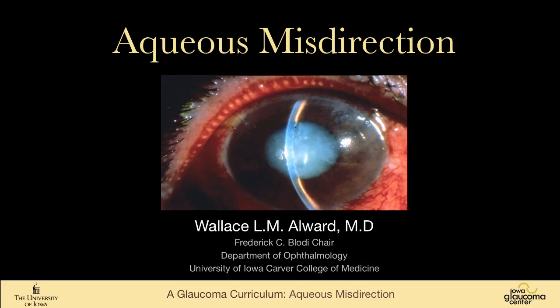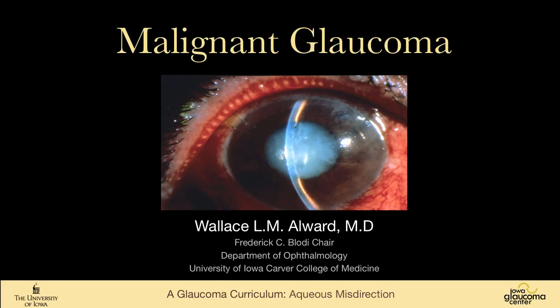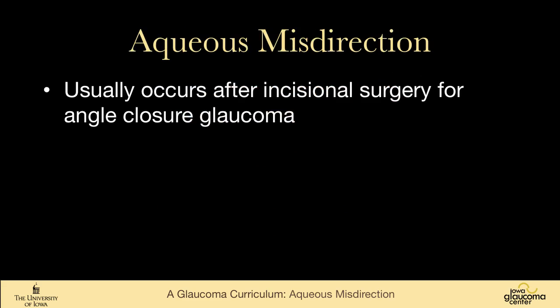We're going to talk about aqueous misdirection, also called malignant glaucoma, sometimes called ciliary block glaucoma — it has lots of names. It's a disorder that we typically see after incisional surgery for angle closure glaucoma. Those are usually hyperopic eyes.